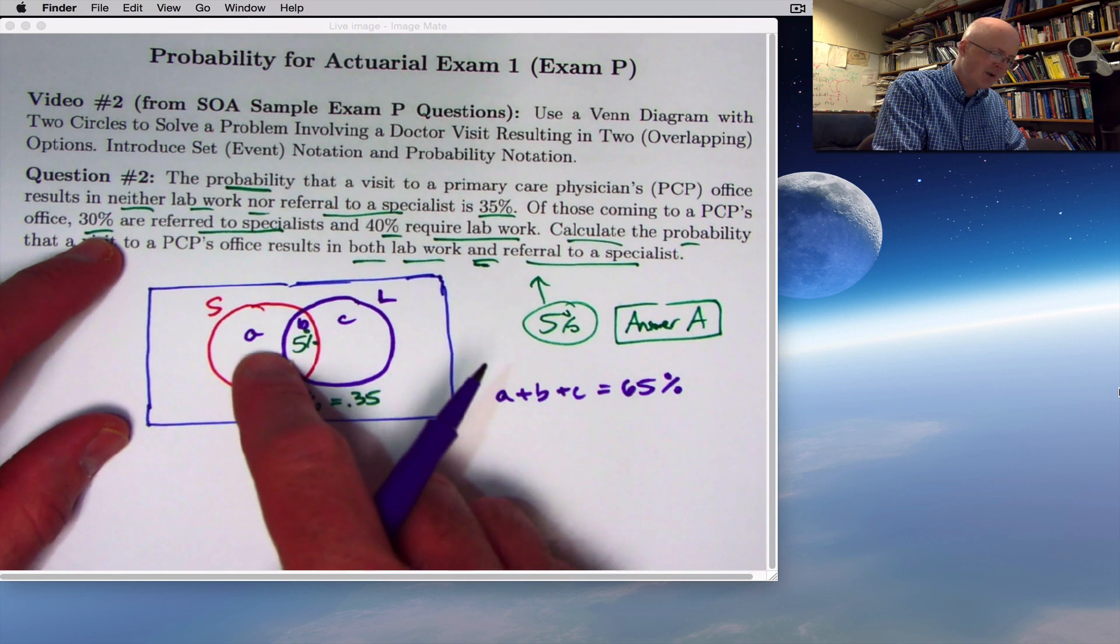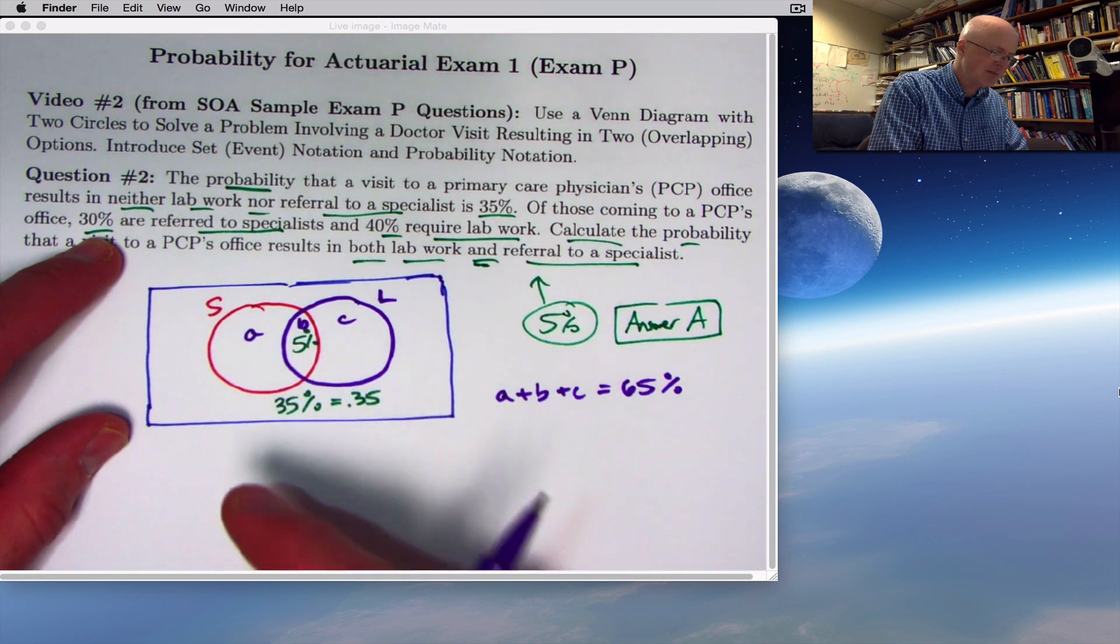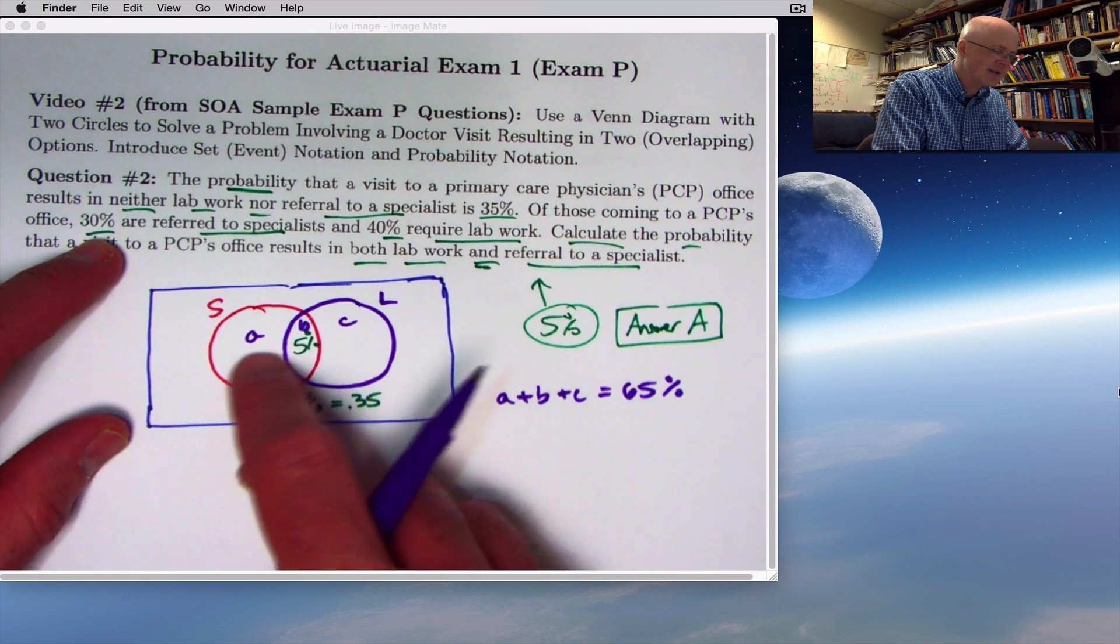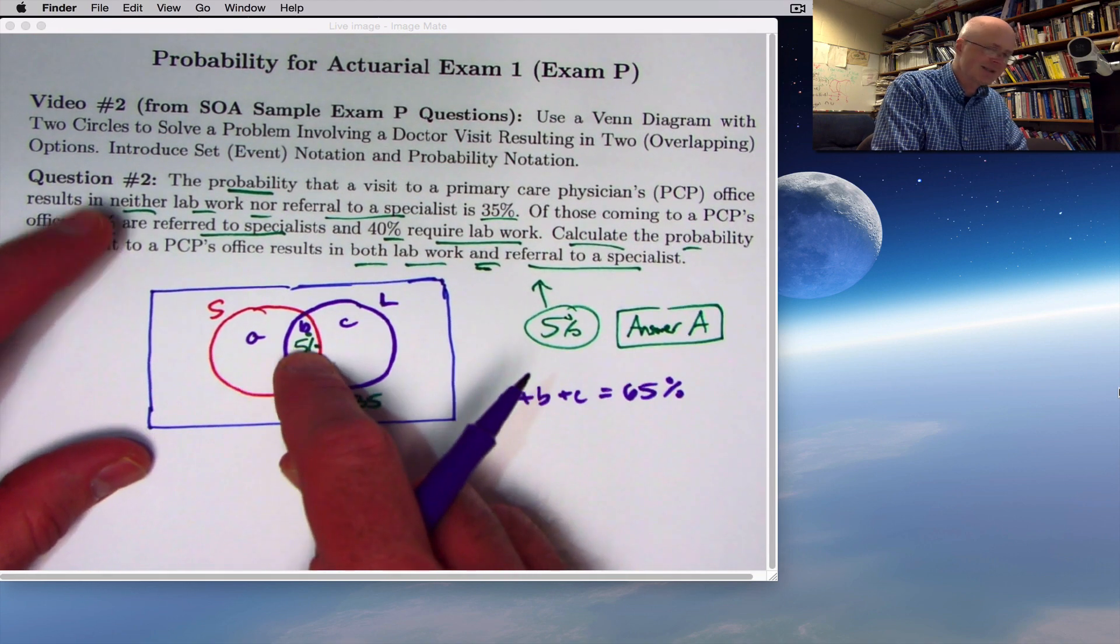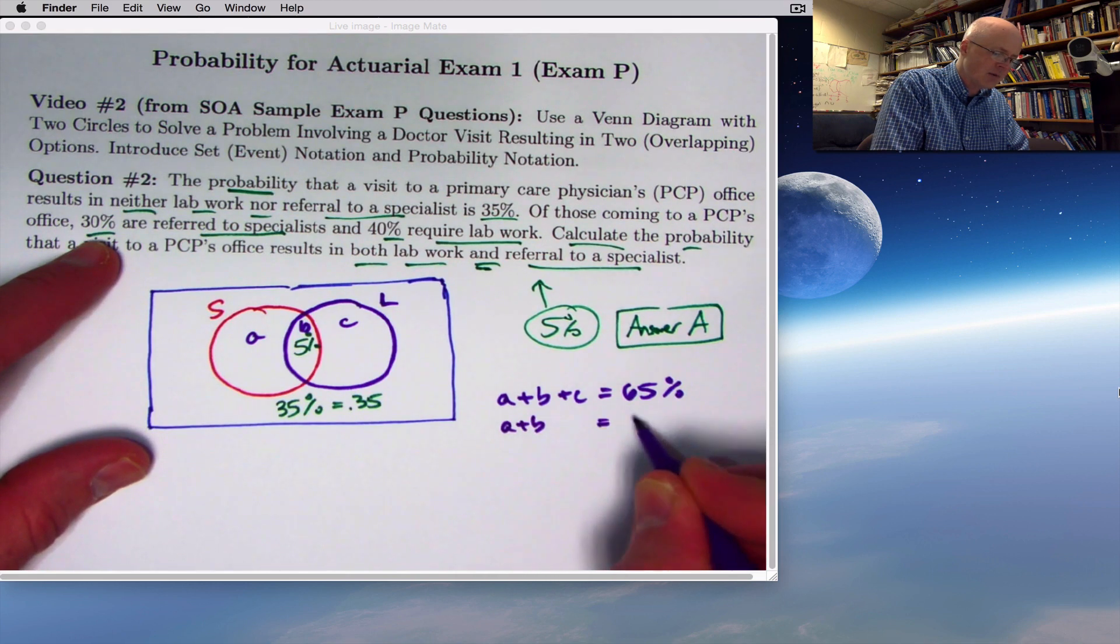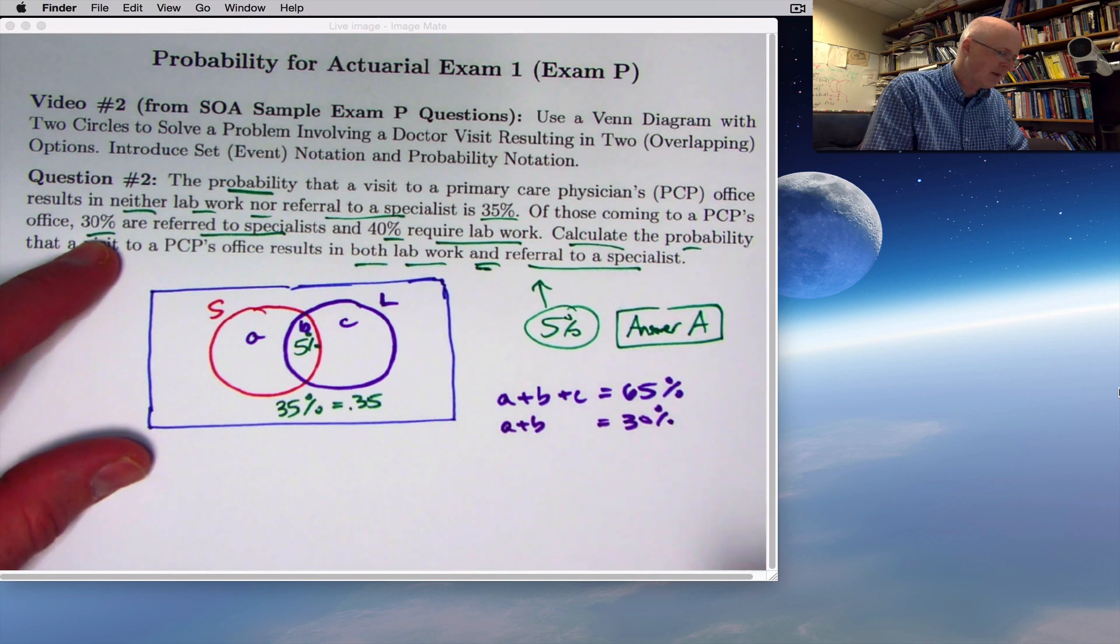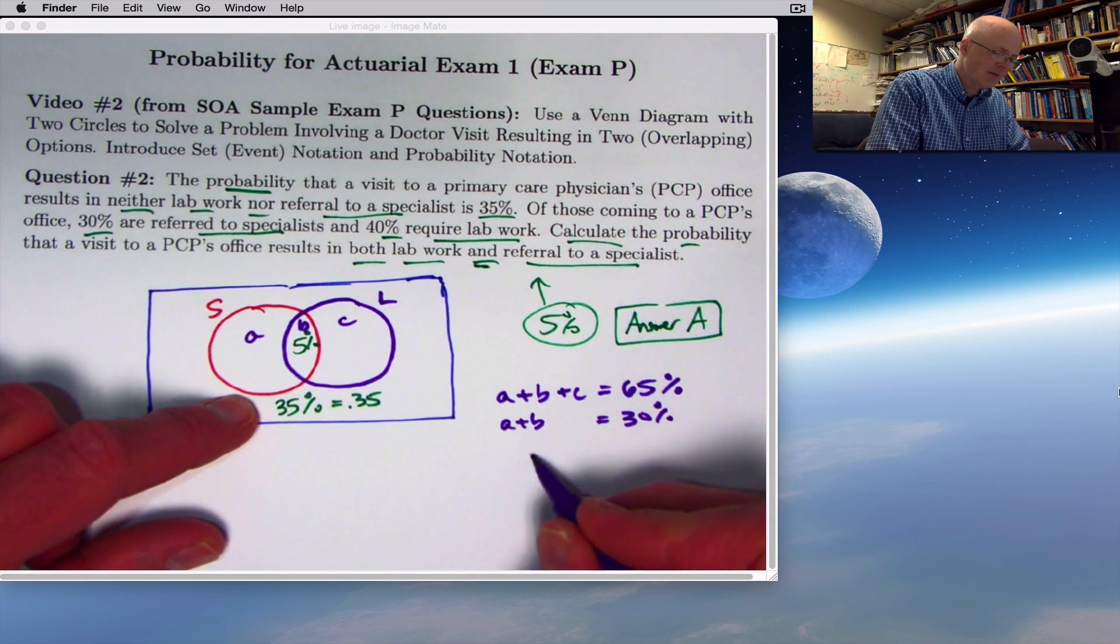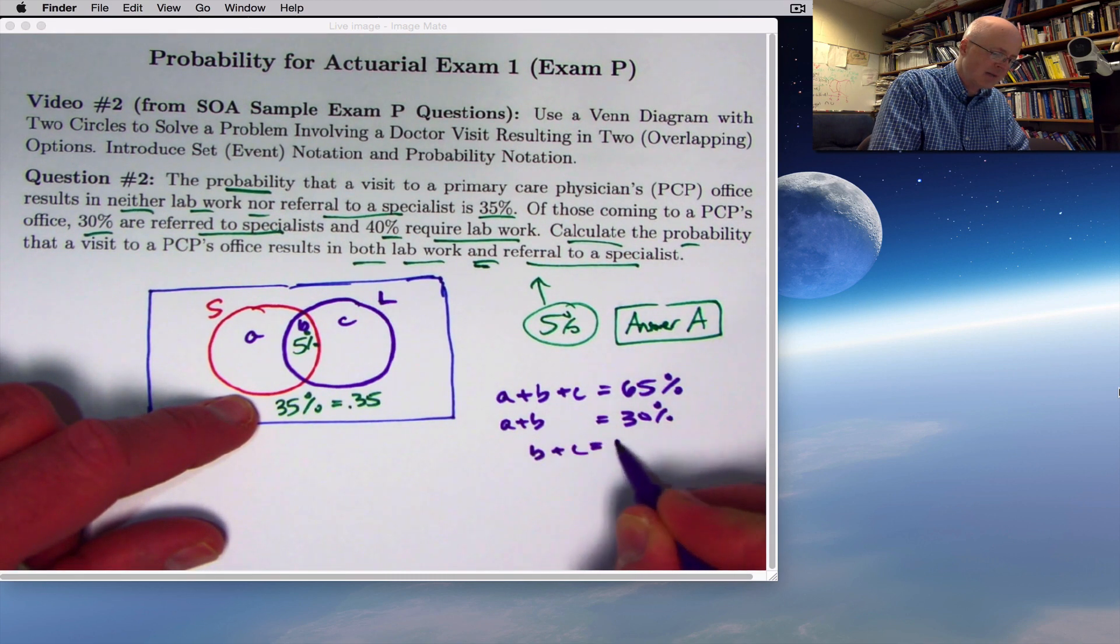What else do I know? I know that A plus B must be 30. You don't want to label just this part with the 30. That's a common mistake. You want these two regions together to add up to 30. A plus B would be 30%. And then B plus C should add up to 40, the lab work. B plus C should add up to 40%.